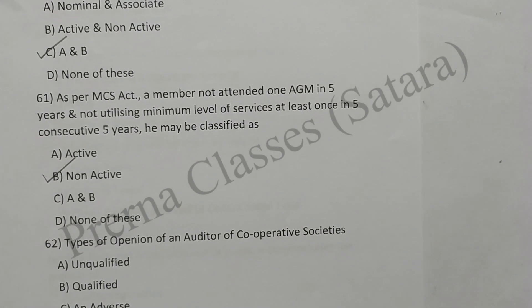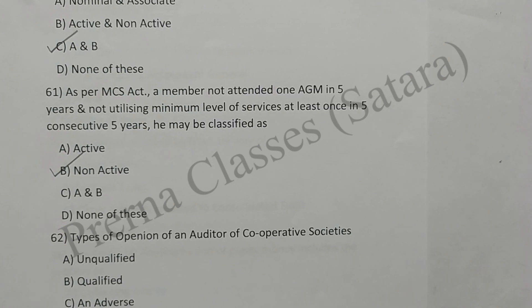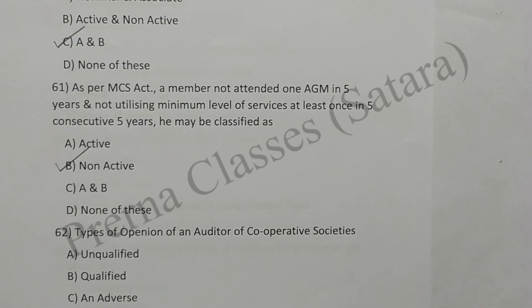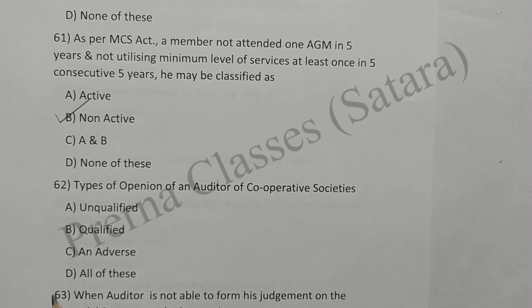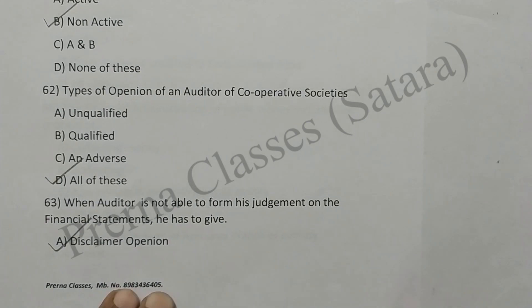Question 62: Types of opinion of an auditor of a cooperative society are unqualified, qualified, adverse, and all of these. Option B is correct. Question 63: When an auditor is not able to form his judgment on the financial statements, he has to give a disclaimer of opinion.